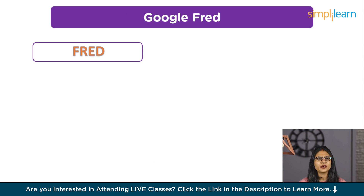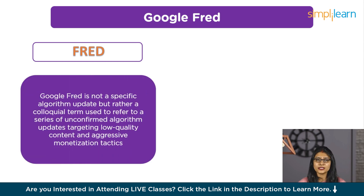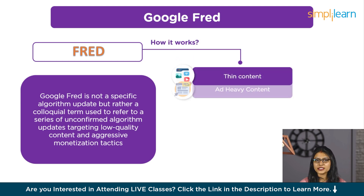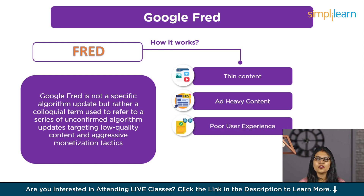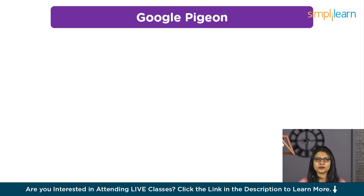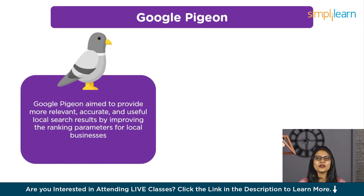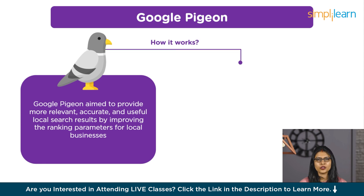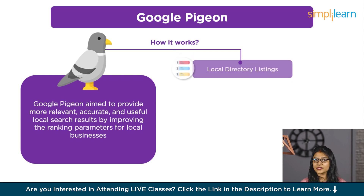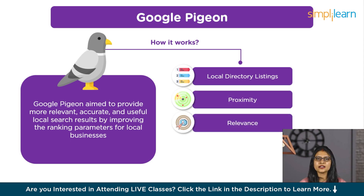Google Fred is not a specific algorithm update, but rather a colloquial term used to refer to a series of unconfirmed algorithm updates targeting low-quality content and aggressive monetization tactics. Websites with thin, ad-heavy content and poor user experience saw significant drops in ranking following these updates. Google Pigeon is a local search algorithm update introduced in July 2014. It aimed to provide more relevant, accurate, and useful local search results by improving the ranking parameters for local businesses. Google Pigeon prioritized local directory listings, proximity, and relevance, impacting local search rankings and the visibility of businesses in geographic-specific searches.